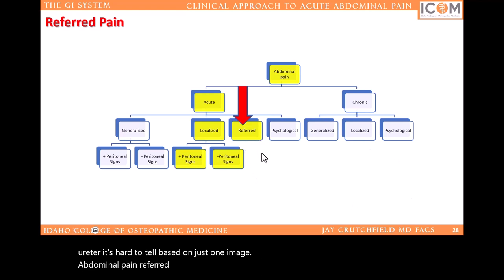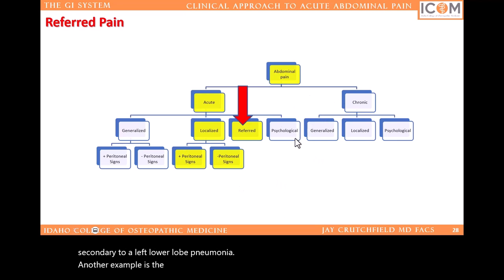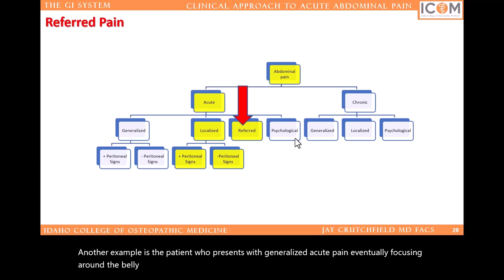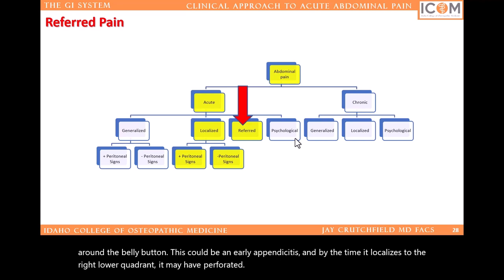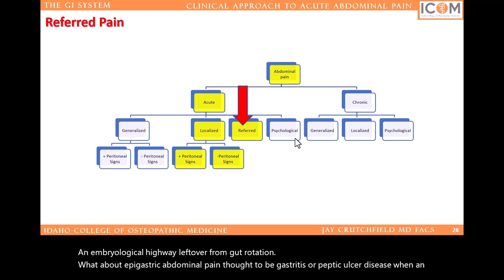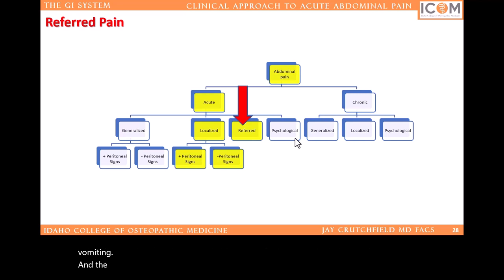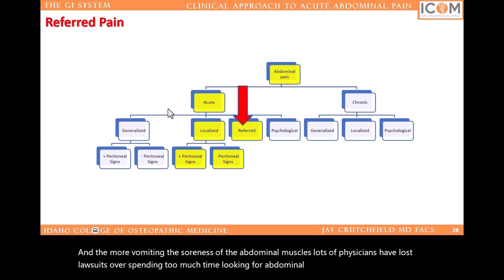Abdominal pain referred to or from another area of the body can be frustrating to work up. The patient with left upper quadrant abdominal pain secondary to a left lower lobe pneumonia is a good example. Another example is the patient who presents with generalized acute pain eventually focusing around the belly button — this could be an early appendicitis, and by the time it localizes to the right lower quadrant, it may have perforated. What about epigastric abdominal pain, thought to be gastritis or peptic ulcer disease, when in actuality it's an inferior wall heart attack causing diaphragmatic irritation and hence vomiting? Lots of physicians have lost lawsuits over spending too much time looking for abdominal pain when it's actually cardiac or chest pain.